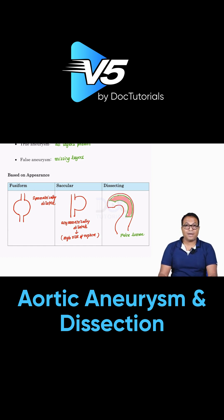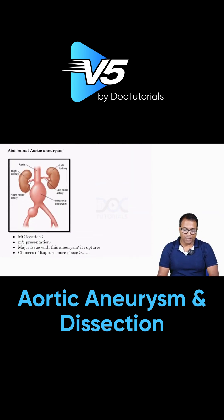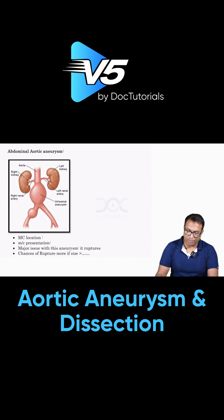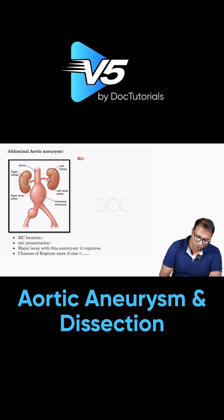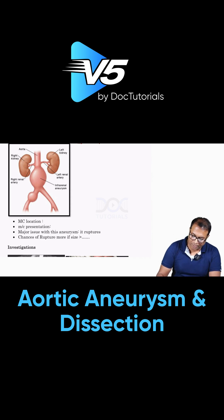Saccular aneurysm has the highest risk of rupture compared to fusiform. The most important aneurysm topic is abdominal aortic aneurysm. The most common site is usually in the infrarenal aorta — after the renal artery branches off. The most common location is infrarenal.